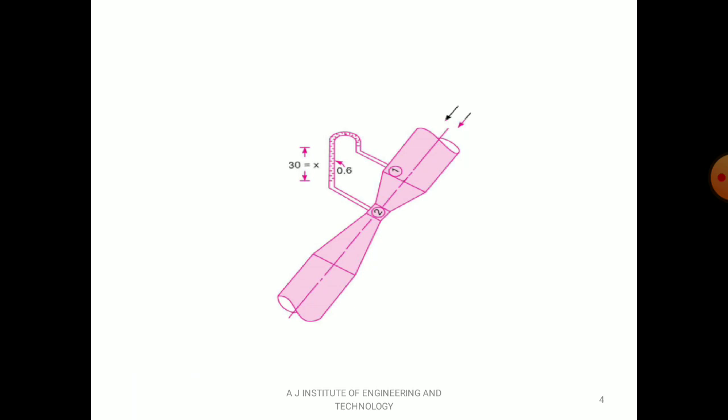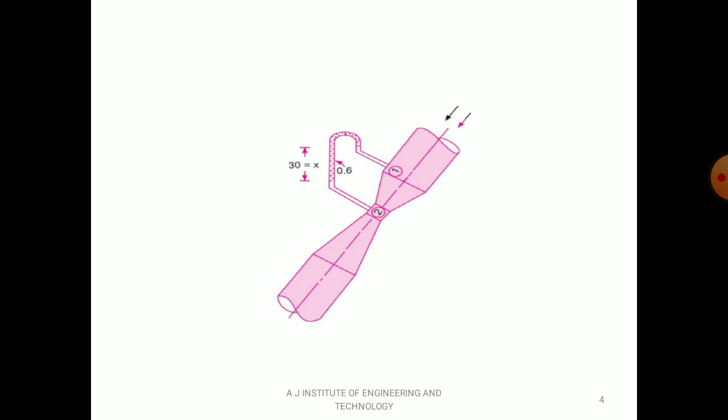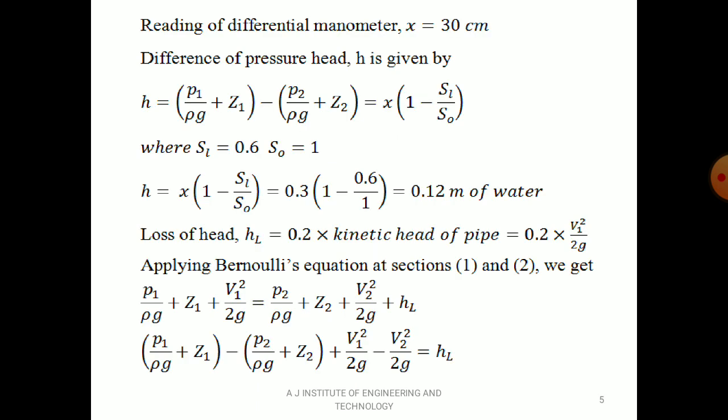In this problem, CD value is not given, so you should apply Bernoulli's equation. You have to write Bernoulli's equation, then calculate V₁ or V₂ depending on the condition, then using that calculate discharge Q = A₁V₁ = A₂V₂. Since there is no CD value in problem 11, apply Bernoulli's equation between sections 1 and 2. The reading of differential manometer x = 30 cm = 0.3 m.